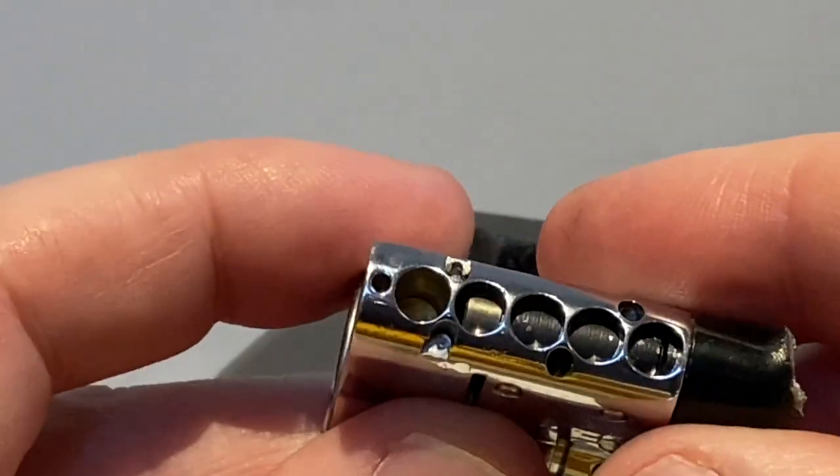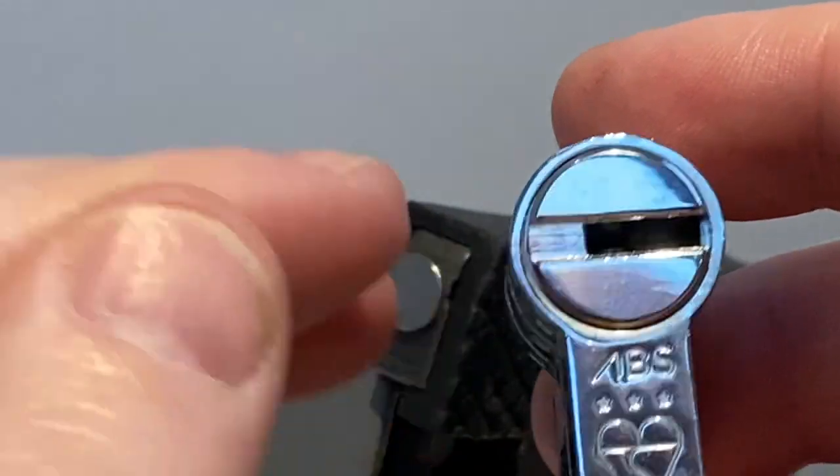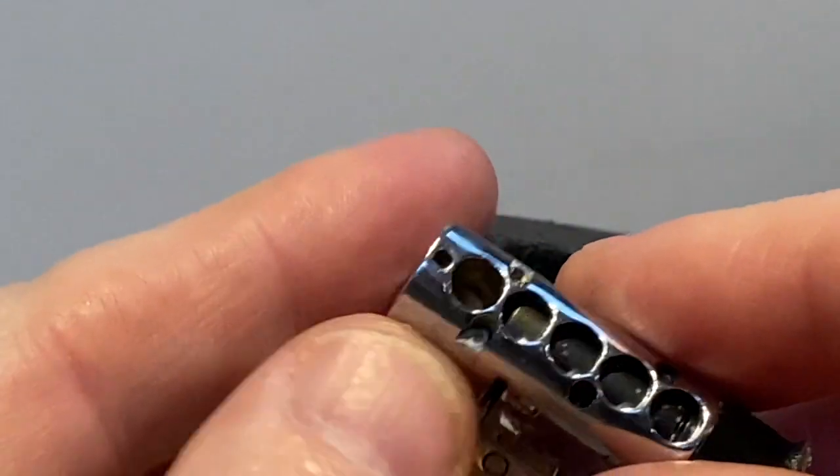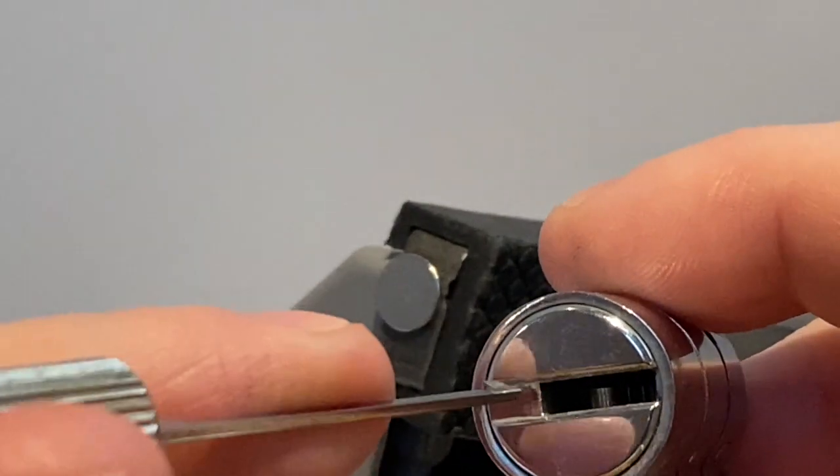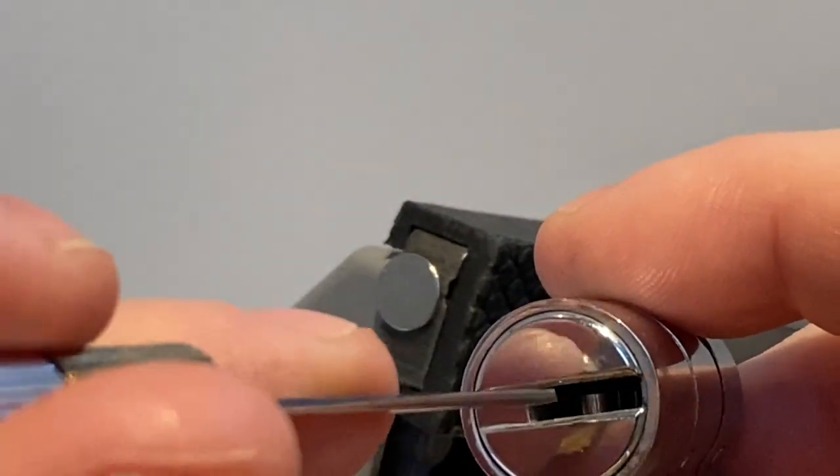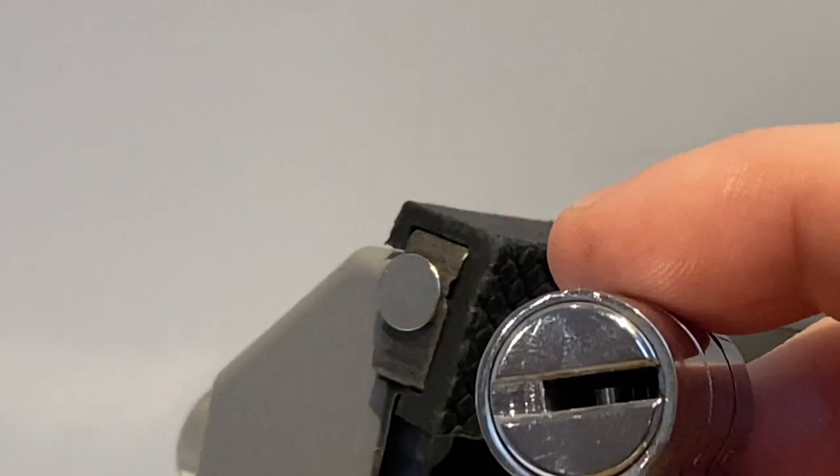Interesting lock, it's got five main pins here. The first one of those is magnetic and sits, well in this one it's pin one. You need the magnet and the key to pull the pin up so it's not blocking the shear line.